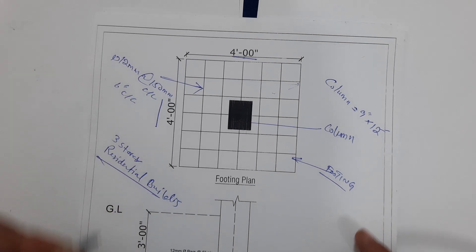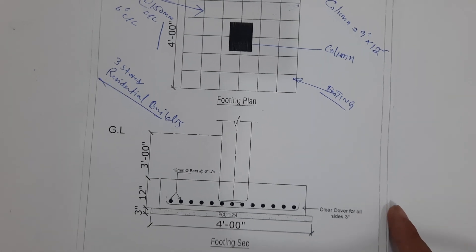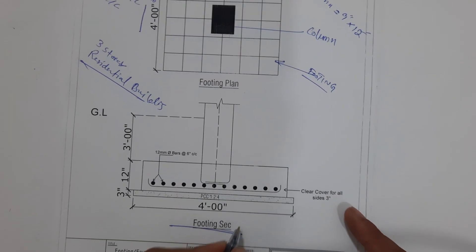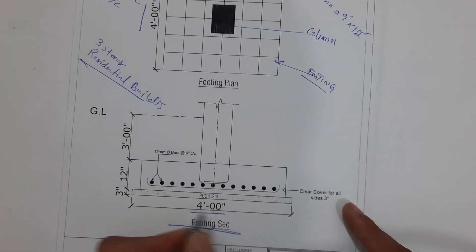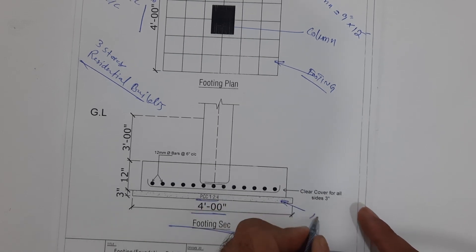Next, you can see this is the footing section. Here you can see this is 4 feet width. First, we have PCC which ratio is 1:2:4 with the thickness of 3 inches.